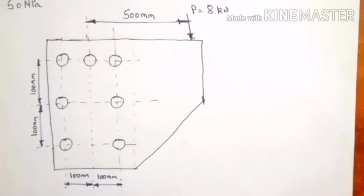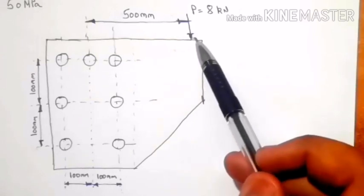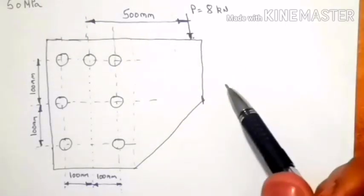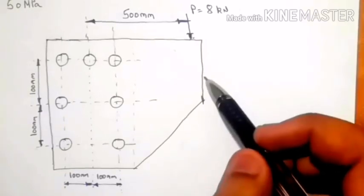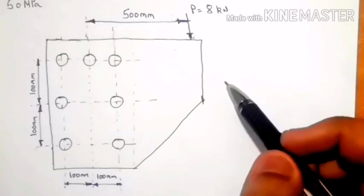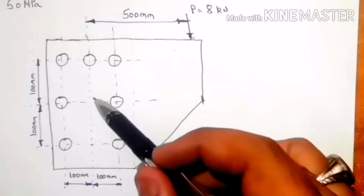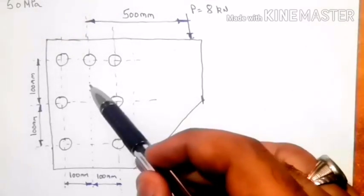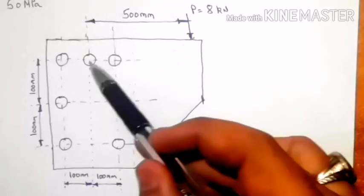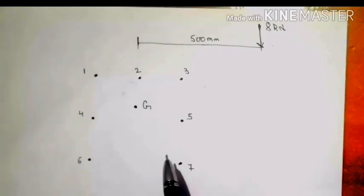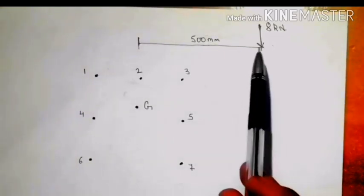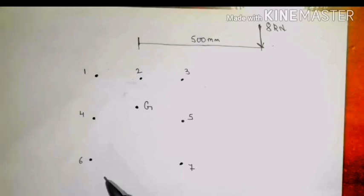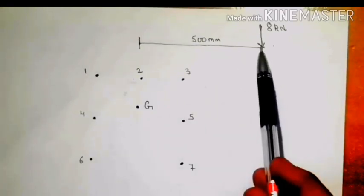The next step is to find the effect of the load on this bolt system. We know that wherever a load is applied on a body, it is assumed to act at the centre of gravity. So we shift this load to the CG we already found. The load is acting at a distance of 500 mm from the centre line of the bolt system.